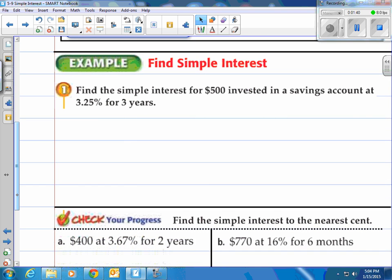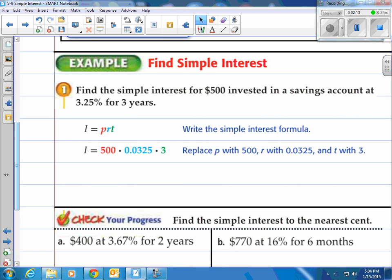Let's do one here. Find the simple interest for $500 invested in a savings account at 3.25% for three years. So what would be the interest over those three years? Step one, write down the simple interest formula, I equals PRT. Then fill in the information that you have. The principal is $500. The interest rate is 3.25% written as a decimal, .0325. And the years given here are three years.